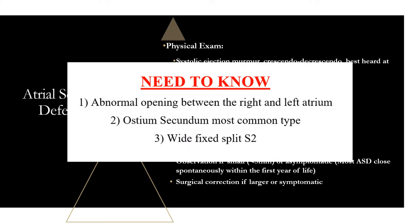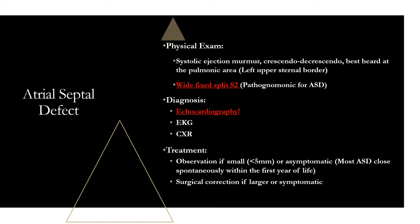The three things you have to remember for ASD: it's an abnormal opening between the right and left atrium; ostium secundum is the most common type; and it has a wide fixed split S2. As soon as you see wide fixed split S2 in any vignette, your mind should immediately go to ASD — that's pathognomonic for it.